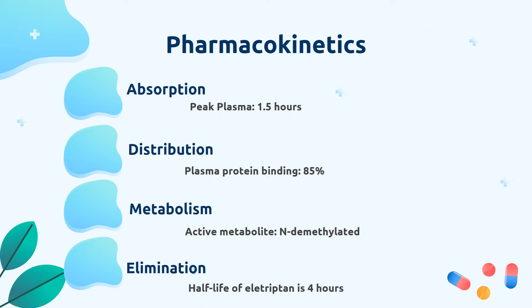A little bit about how the body processes this medication. It takes about one and a half hours for a patient to reach peak plasma concentration in their body after taking allotriptin. This medication has 85% plasma protein binding capacity. The active metabolite of allotriptin is N-demethylated allotriptin, and the half-life of this medication is about four hours.